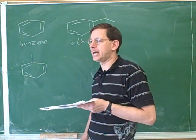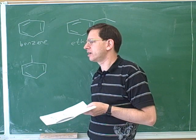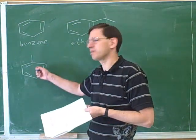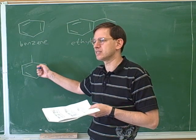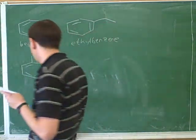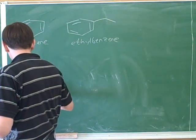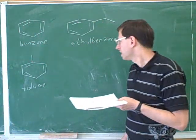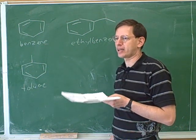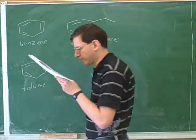However, it turns out that it's hardly ever called that. As is often the case, there are some common names that have almost supplanted the IUPAC names. I don't know if you happen to know what the common name for this is. When there's a methyl group on benzene, it turns out that the common name for this is toluene. It just has to be memorized. And like I say, that is used much more often than the IUPAC methylbenzene term. That just has to be memorized.